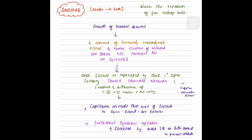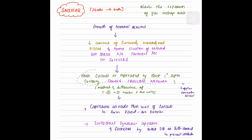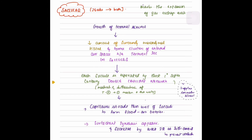This is followed by the saccular stage, which marks the expansion of the gas exchange area. Growth of terminal airways decreases the surrounding mesenchymal tissue and forms clusters of enlarged airspaces known as terminal sacs or saccules. Each saccule is separated by thick primary septa containing a double capillary network supplying the immature alveoli. Capillaries invade the thin wall of saccules to form the blood-air barrier, and surfactant synthesis appears at this stage, secreted by week 32 in sufficient amounts to prevent atelectasis.